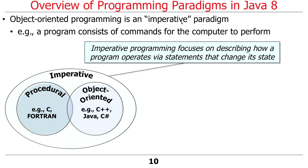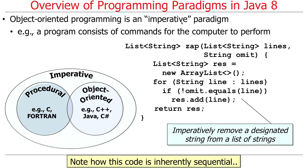Unless you've been doing functional programming or using parts of JavaScript, you've probably been doing imperative programming most of your lives. Here's a simple example of an imperative program — a little method called 'zap'. It reads in a list of strings called 'lines', and you give it a string you want to omit. It makes a new ArrayList, then for every line in the list, it checks whether that line equals the string we're trying to get rid of. If it equals, it skips it; if it doesn't, it adds it to the result, and then returns the result.